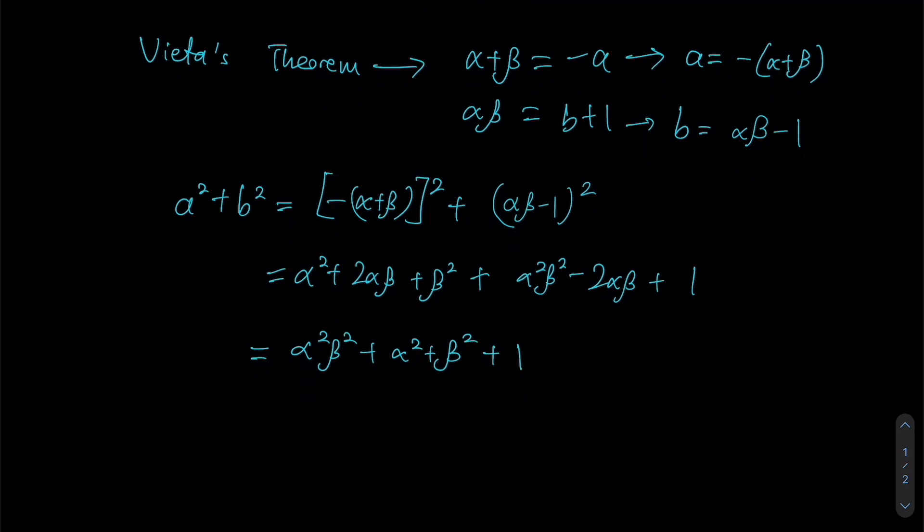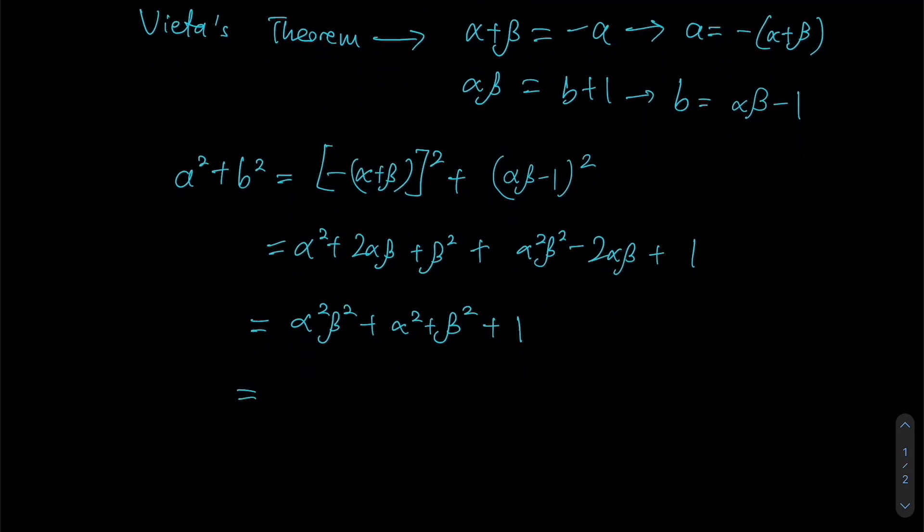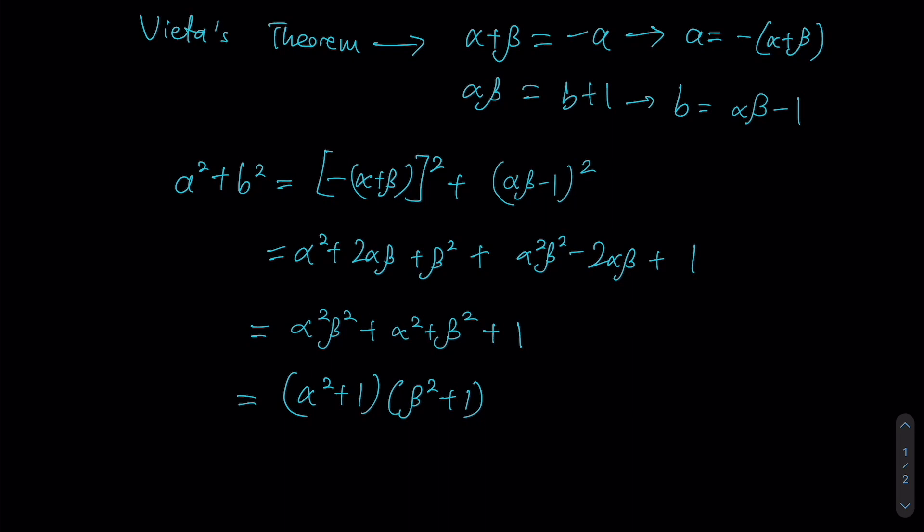It doesn't take much to see that this is an expression that can be factorized, seeing as you have common terms all over the place. We can factorize this into the form alpha² plus 1 times beta² plus 1. Since this form can't be factorized any further, let us take a step back and see whether we have achieved what the question is asking us to do.